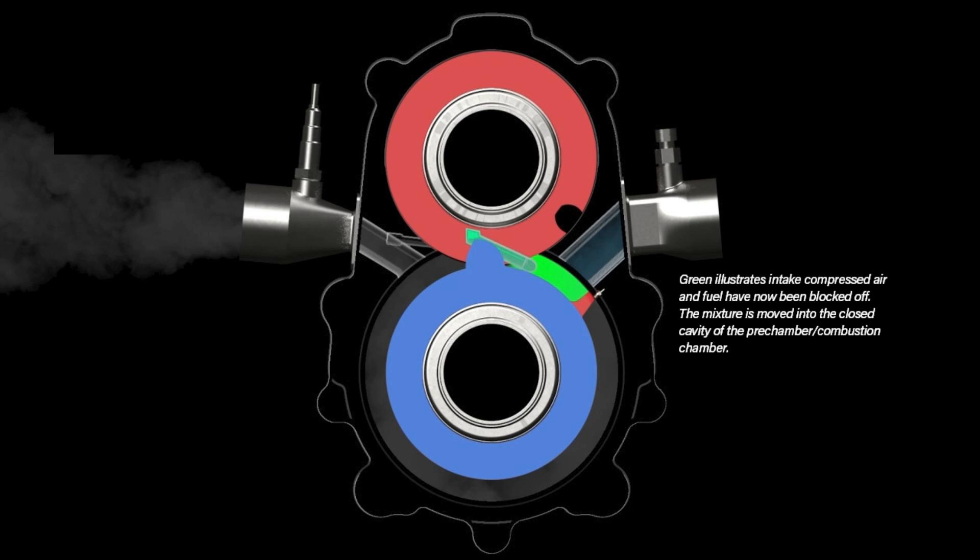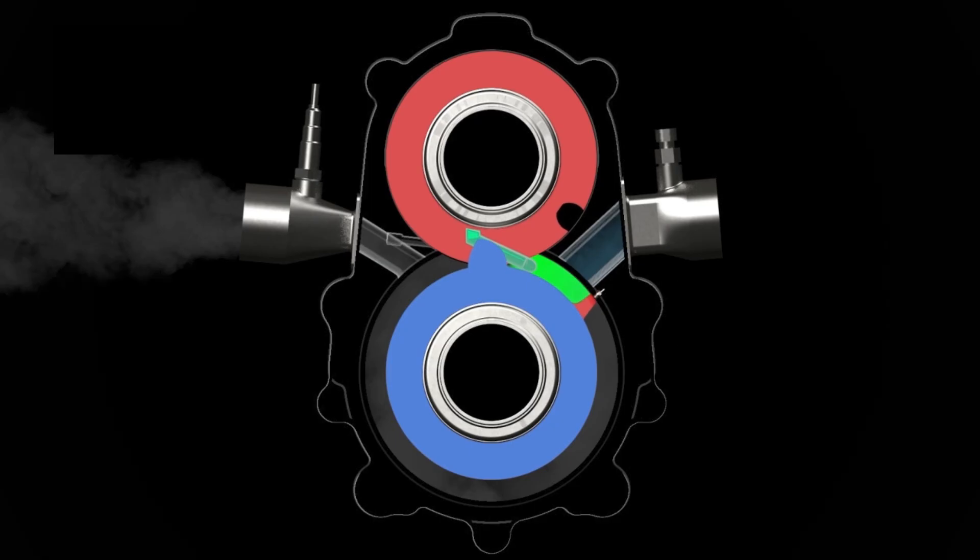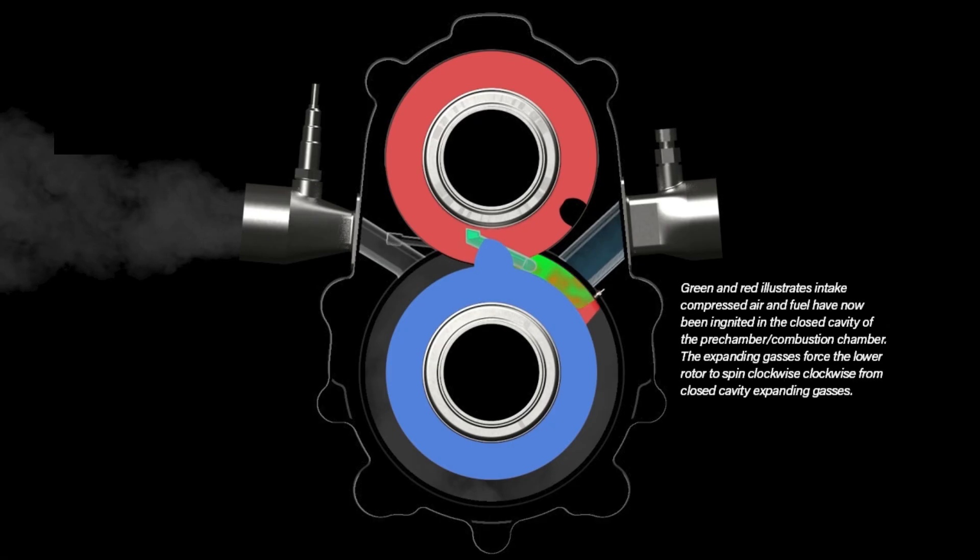Green illustrates intake compressed air and fuel have now been blocked off. The mixture is moved into the closed cavity of the pre-chamber combustion chamber. Green and red illustrate that intake compressed air and fuel have now been ignited in the closed cavity of the pre-chamber combustion chamber. The expanding gases force the lower rotor to spin clockwise from closed cavity expanding gases.